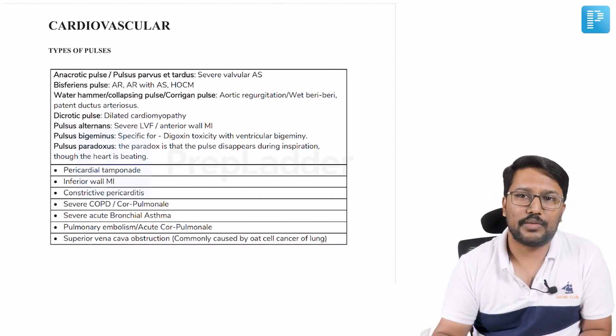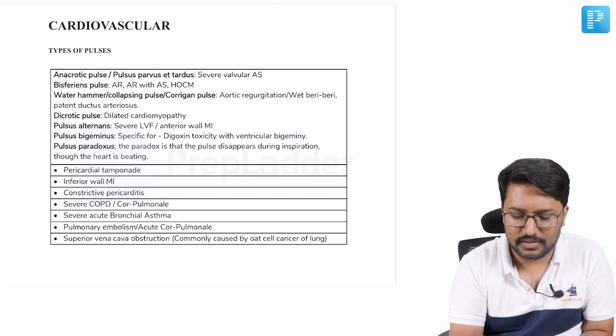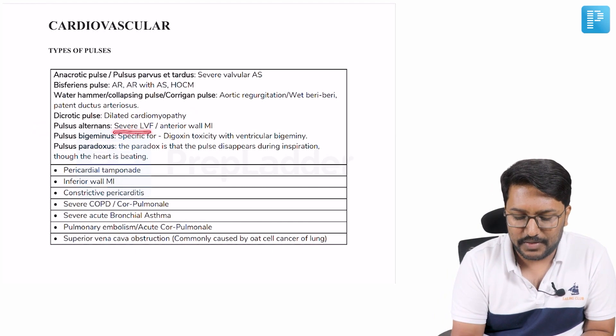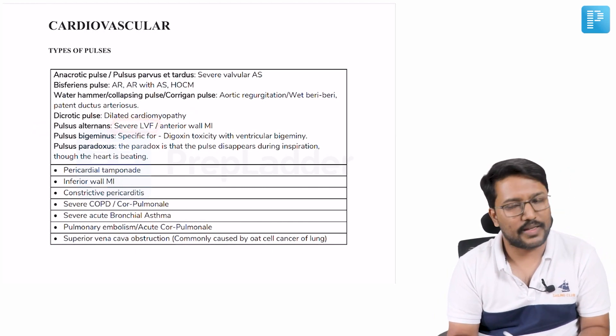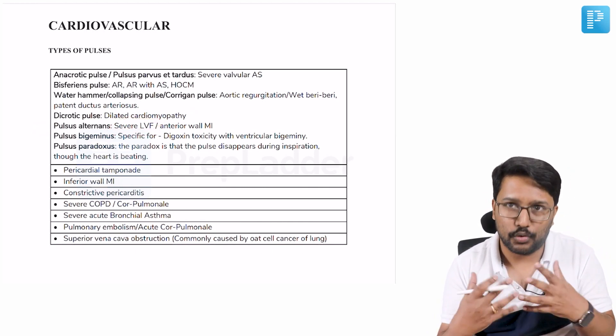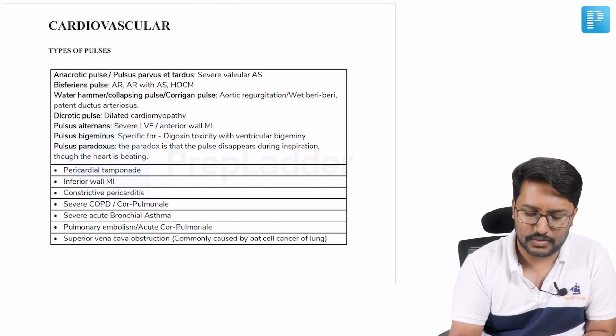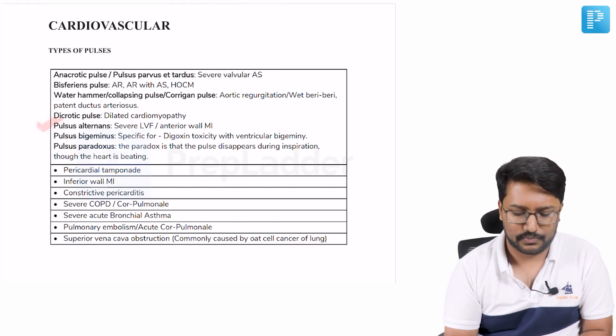One more frequently asked question: where do you see pulsus alternans? We see pulsus alternans in severe left ventricular failure. Yes, we do also see in anterior MI. Most important thing you need to remember is severe left ventricular failure where you see pulsus alternans.